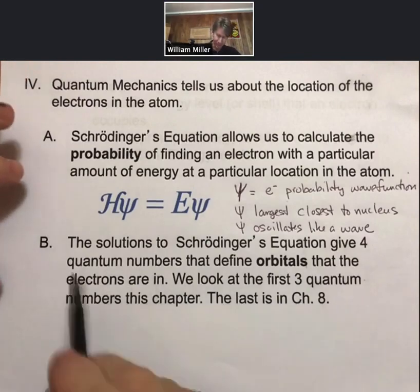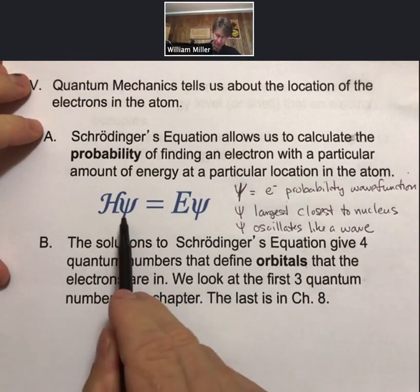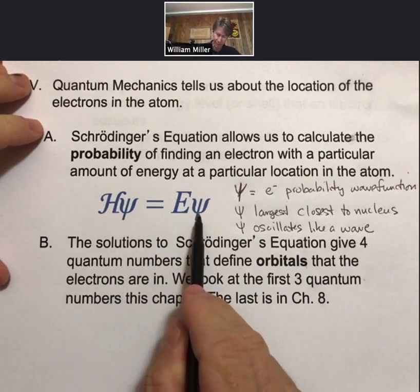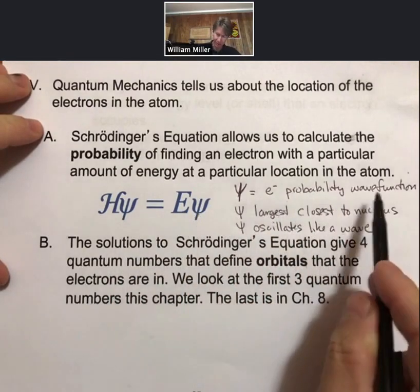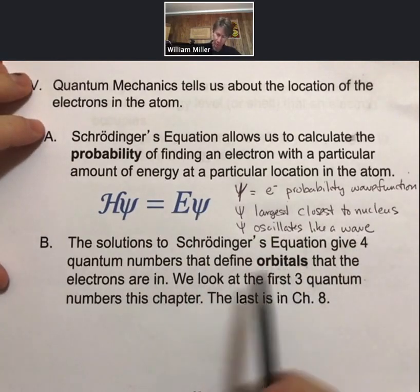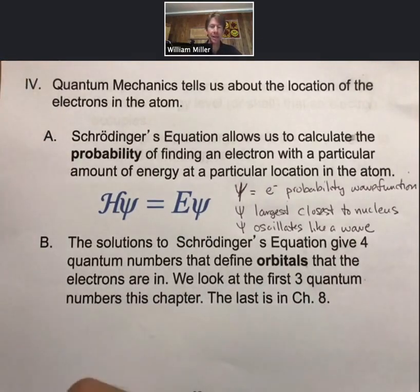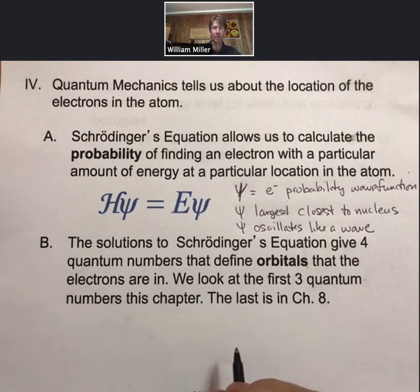Now, the solutions to Schrödinger's equation, which are in terms of solutions for psi, the electron probability wave function, lead to or define orbitals, or give four quantum numbers that define orbitals that the electrons are in. We look at the first three quantum numbers this chapter, and we look at the last quantum number in the next chapter or lecture outline.